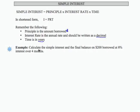If we look at this example, calculate the simple interest and the final balance. Those are our goals. On $200, that's our principal.